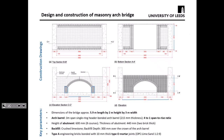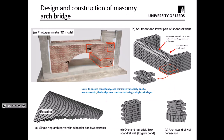We used Type A engineering bricks, and the mortar used was Type O — 1:2:9 cement to lime to sand. This slide shows the construction arrangement of the masonry constructed in the lab. You can see the abutments had to be cut at an angle so the arch sits nicely. The arch ring was a single-ring arch barrel, and for the spandrels, we constructed them using one-and-a-half-brick-thick spandrel walls.